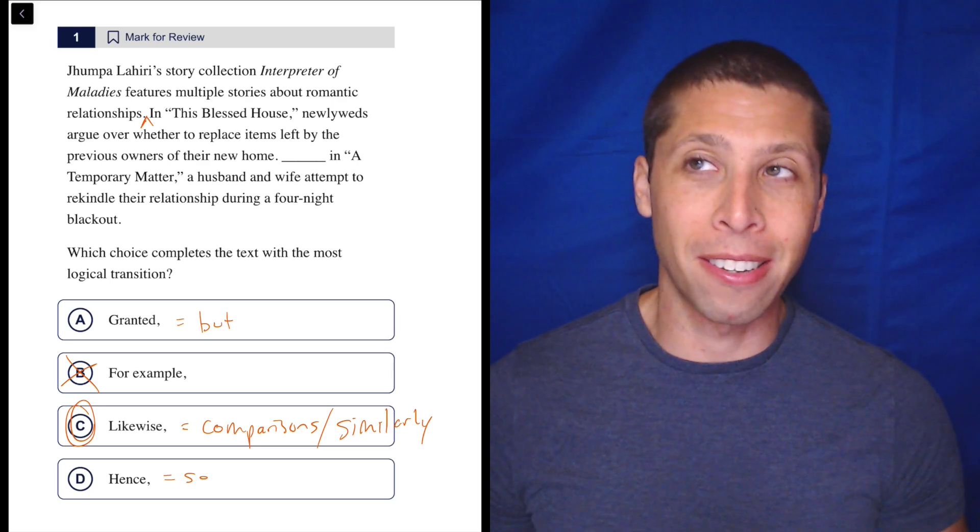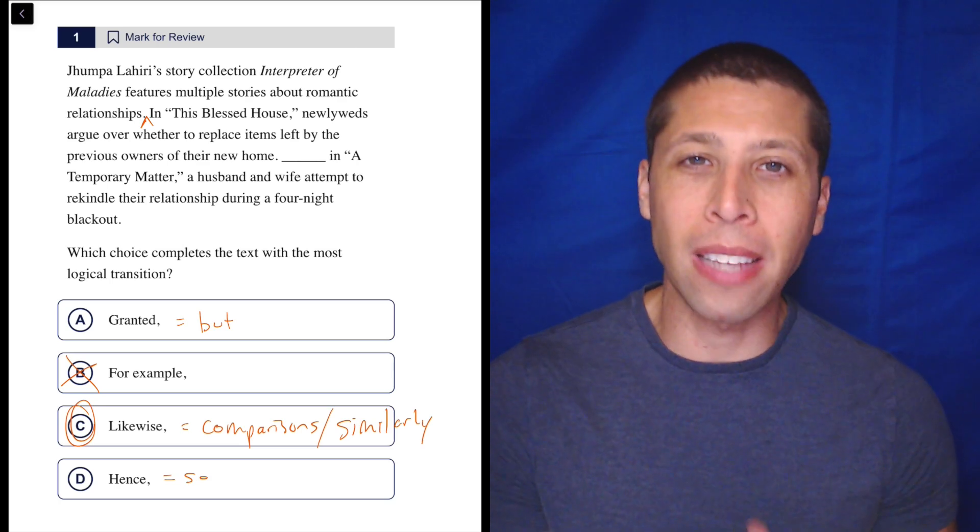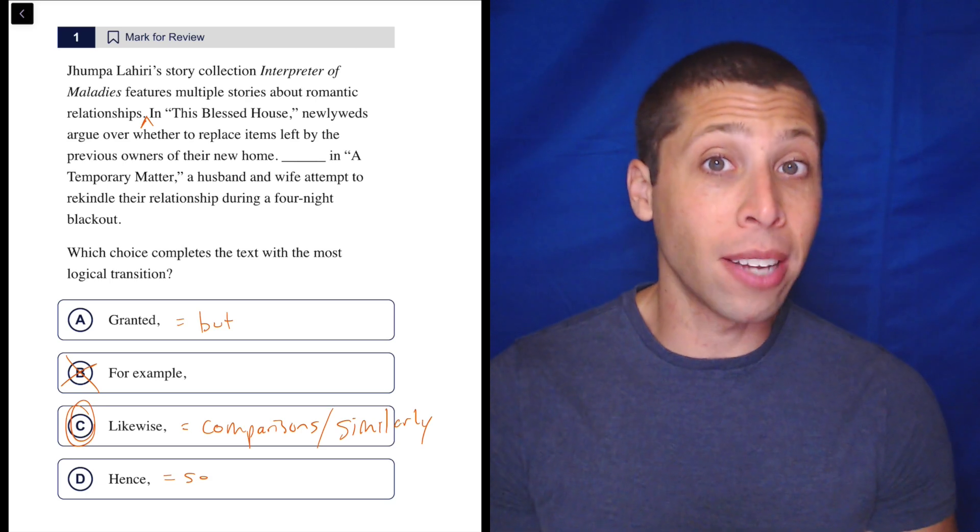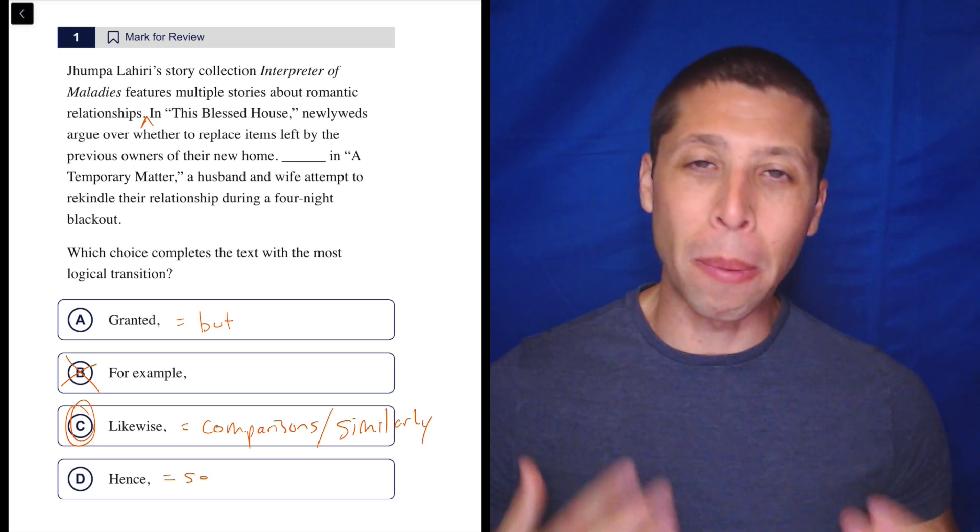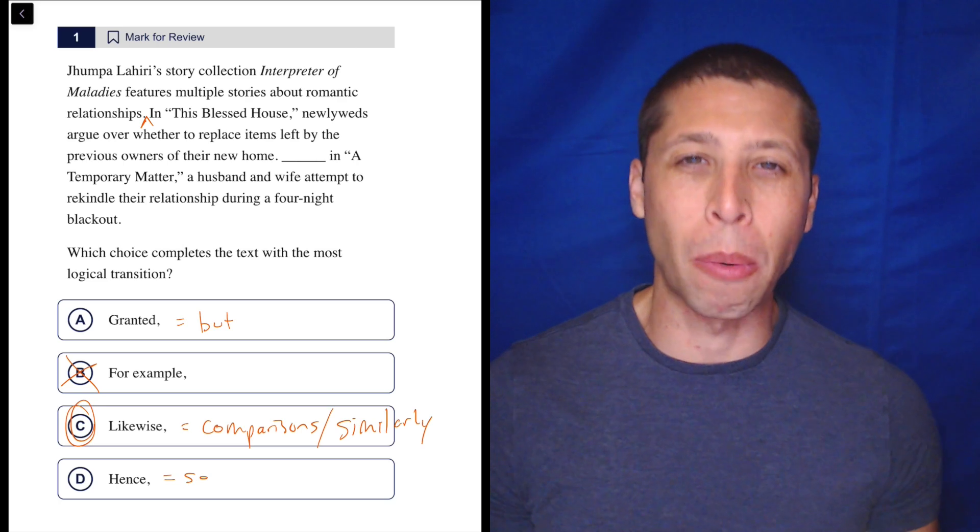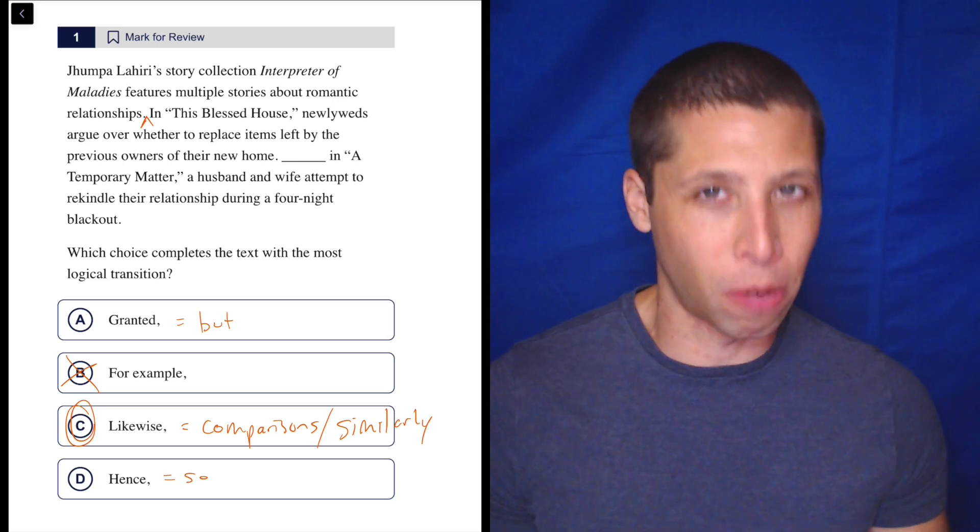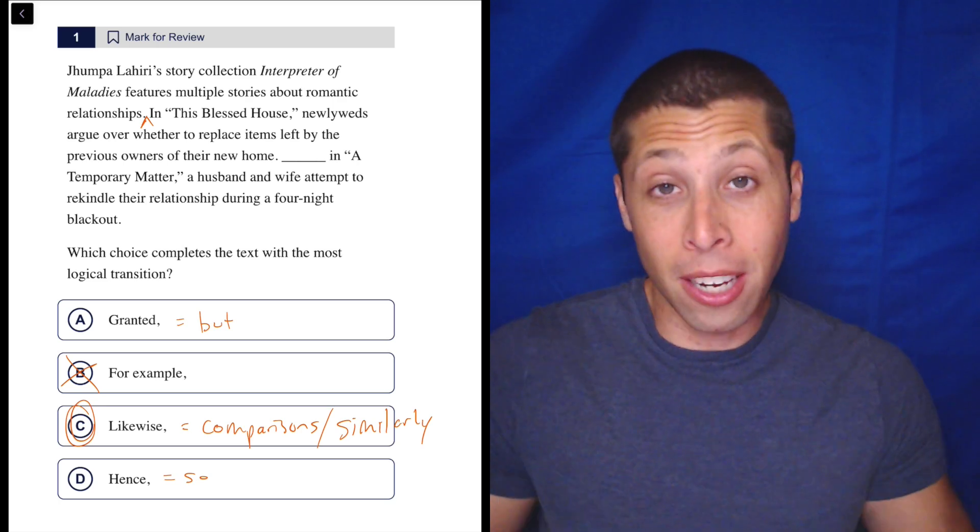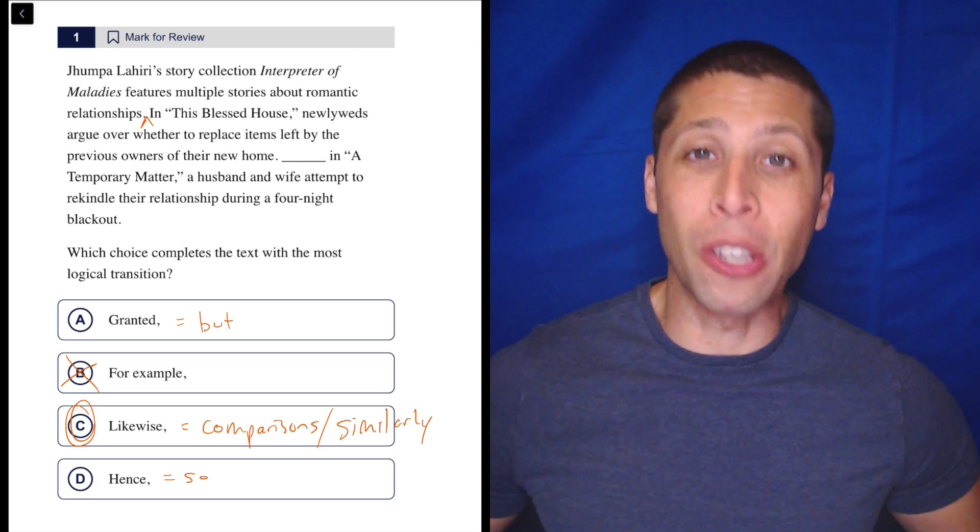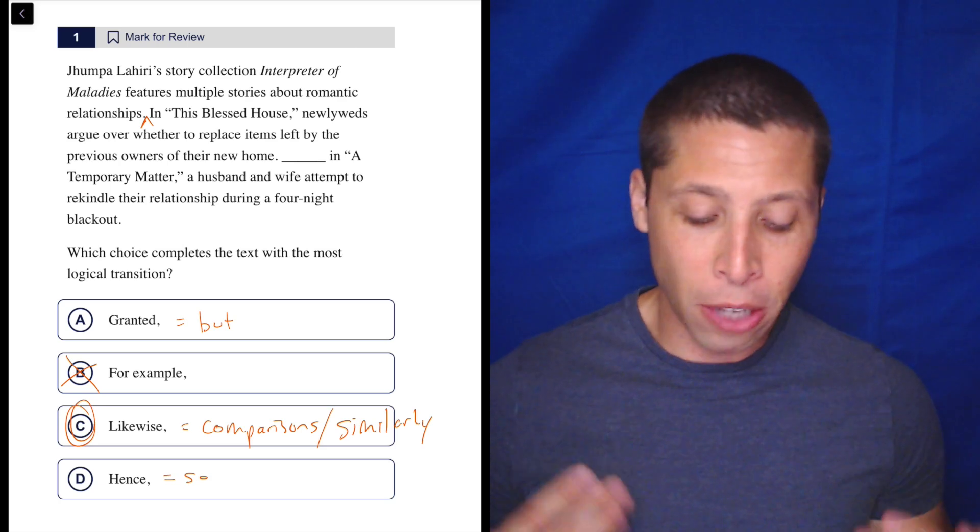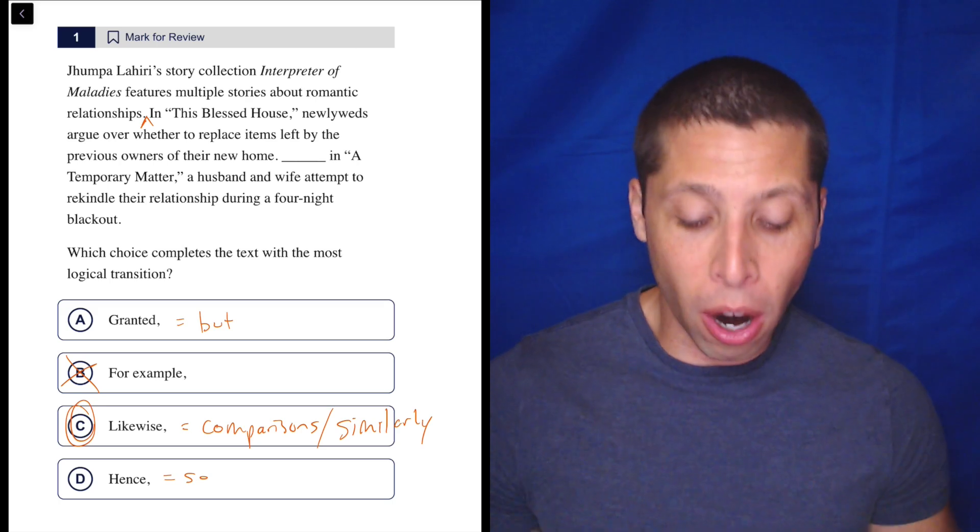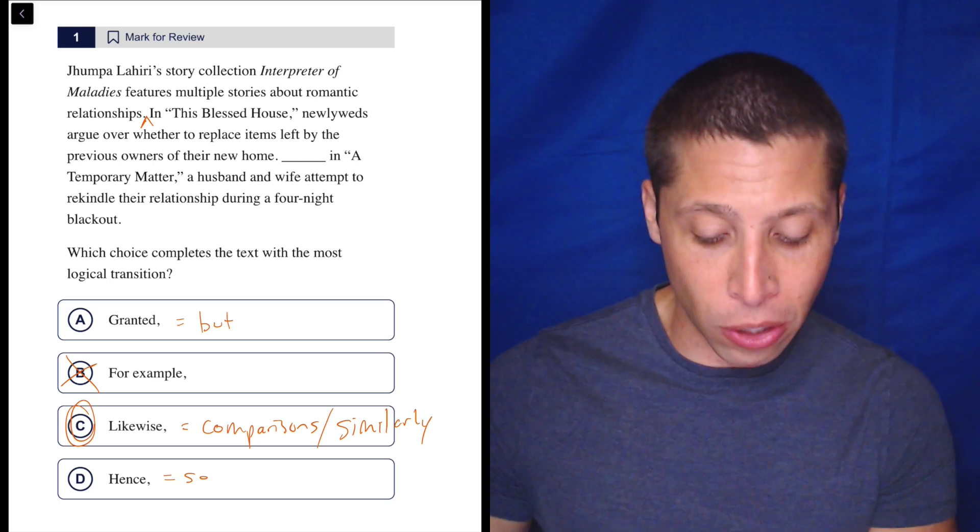But I do believe that it is going against a rule that I've probably said in other videos. The word likewise is almost never correct. It's one of those words that sounds really smart, so people are tempted to pick it when they're confused about what's going on. But it's very rarely the correct answer on an SAT question. Here it was. And that's because it was being used in its actual way, which was just to say that two things are similar. So both of these examples are examples of what came up in the first sentence.